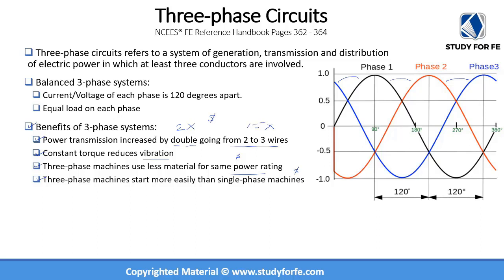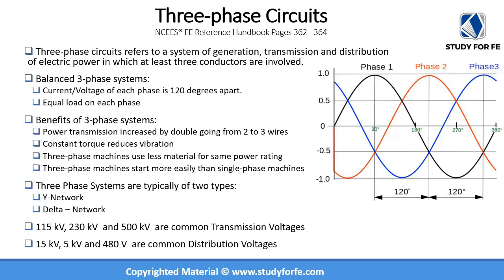Within three-phase systems we have two types of arrangements: the first is a Y-network and the second is a delta network. We will explore each one of them in detail.